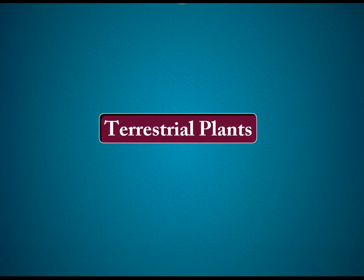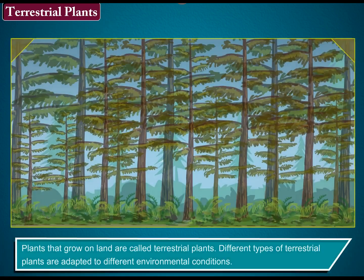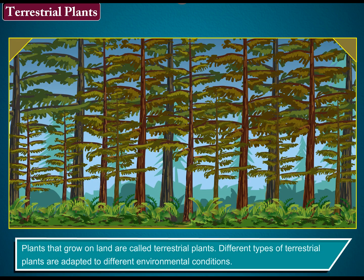Plants that grow on land are called terrestrial plants. Different types of terrestrial plants are adapted to different environmental conditions.